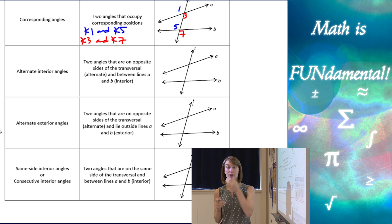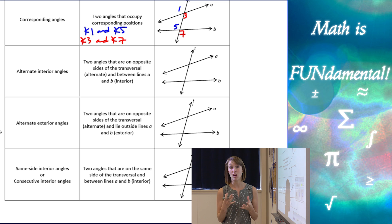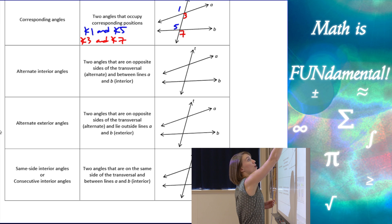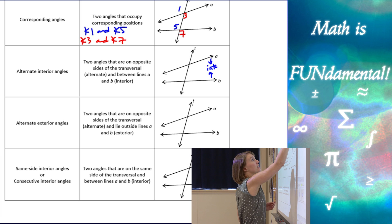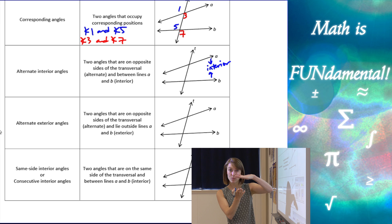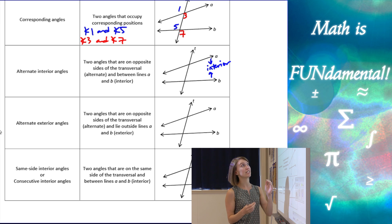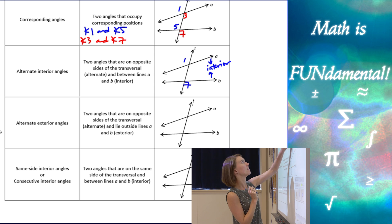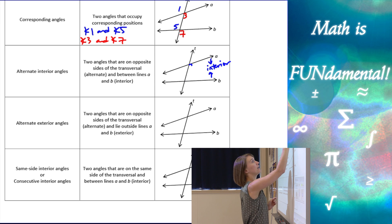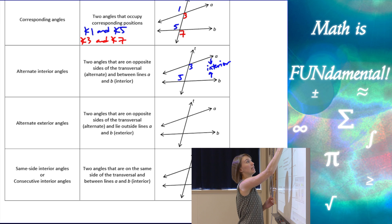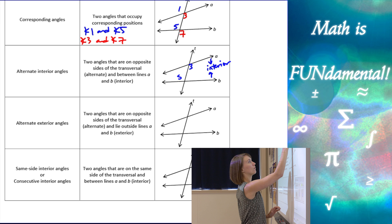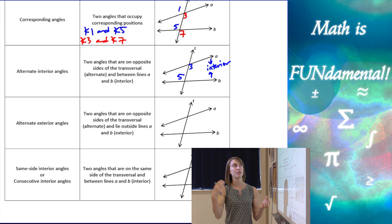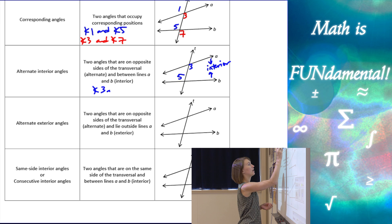Next term is alternate interior angles. We want two angles on opposite sides of the transversal — which gives us the 'alternate' piece — and we want them to be in between lines A and B, giving us the 'interior' piece. The interior is the region between the two lines, and alternate means opposite sides of the transversal T. So angle three and angle five would be alternate interior angles, because they're on opposite sides of the transversal and on the interior.